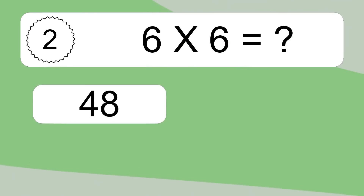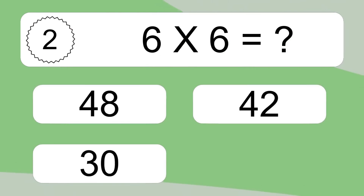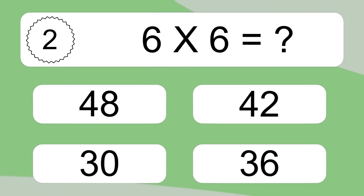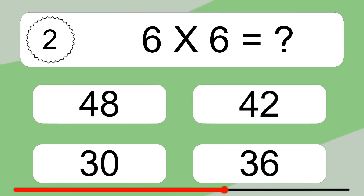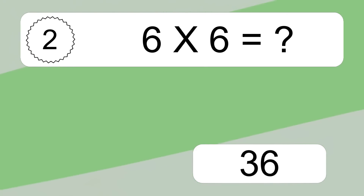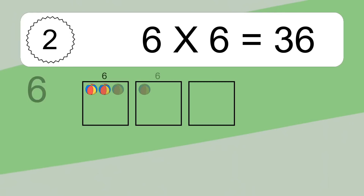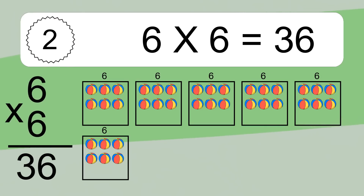6 times 6 equals what? 6 times 6 equals 36.